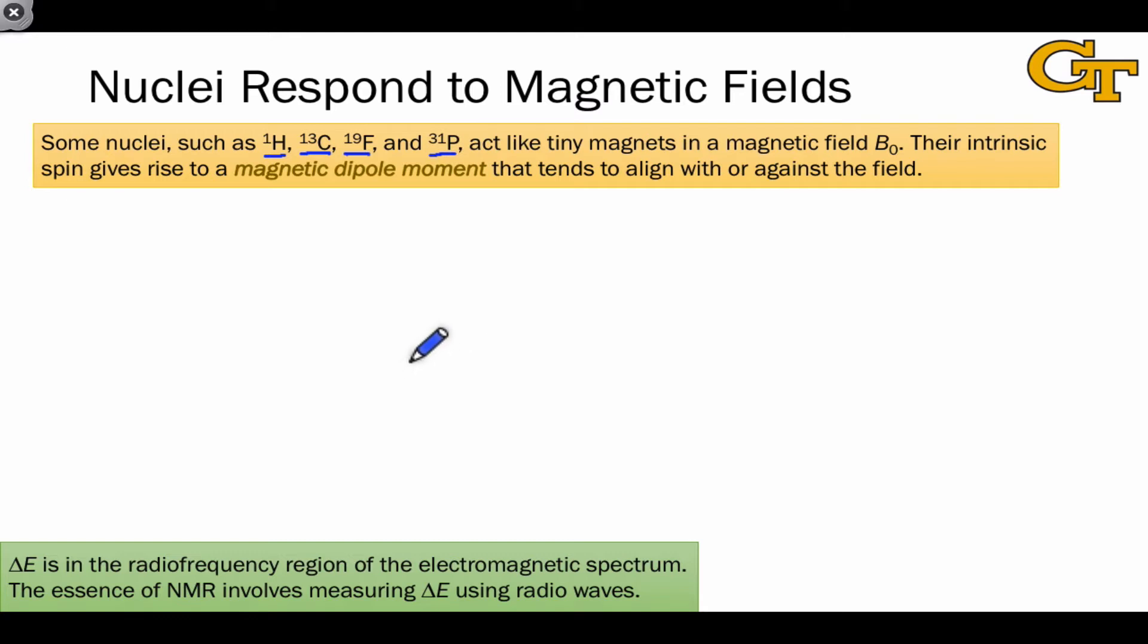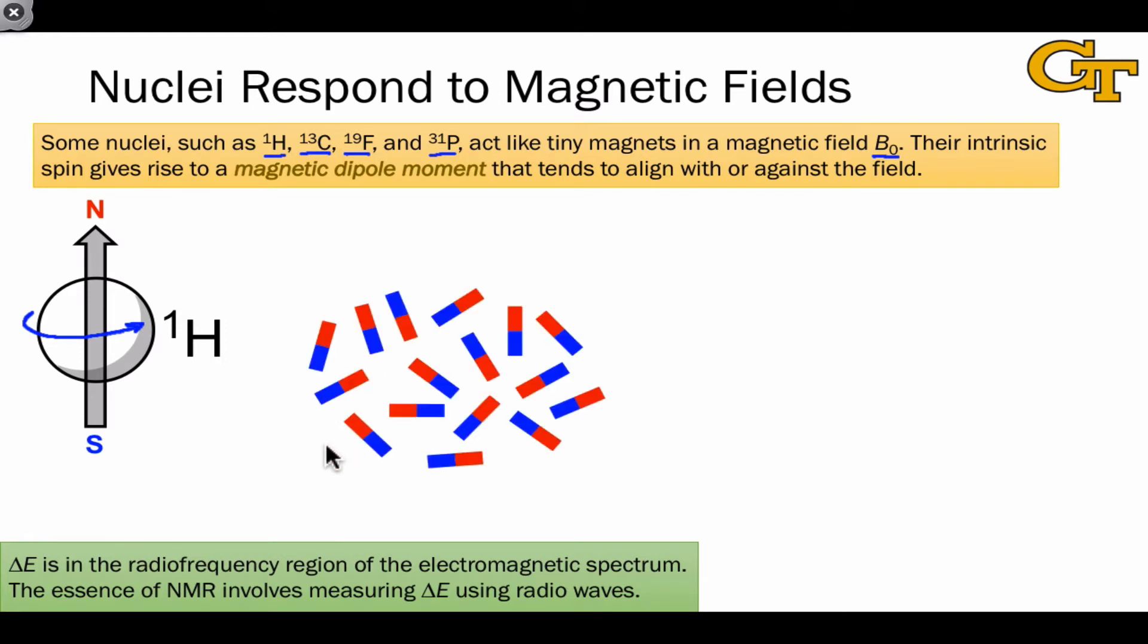These nuclei act like tiny magnets in a magnetic field. In this and future videos, we're going to call this external magnetic field that we apply using a very strong magnet, B0.